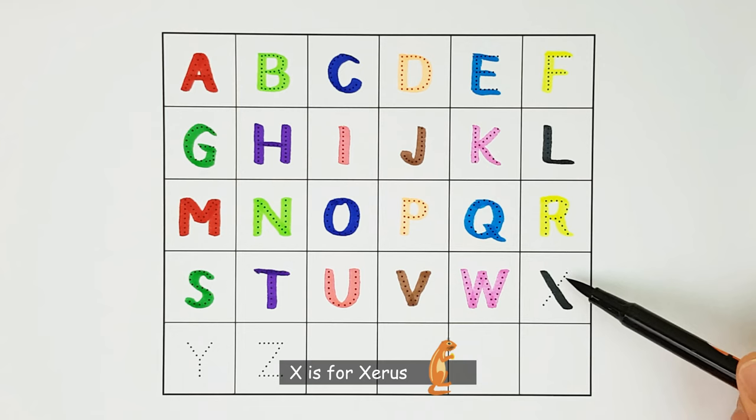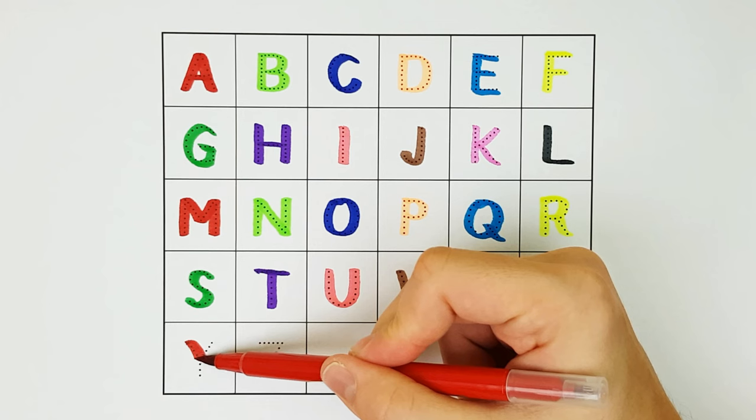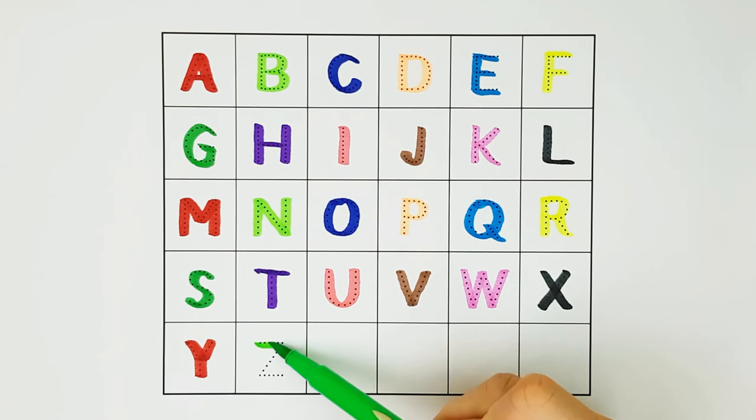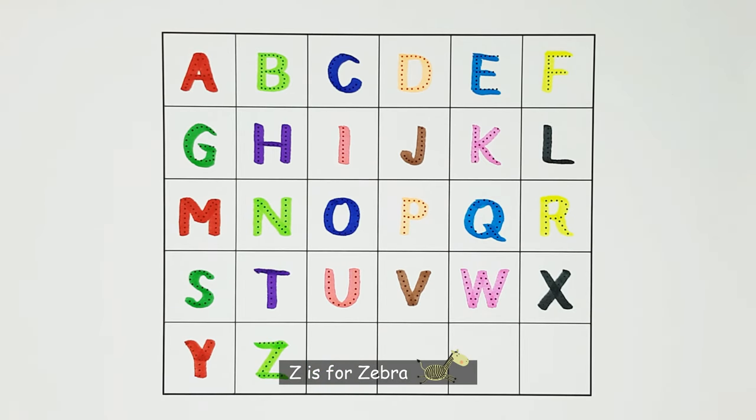X. X is for Xerus. X. Y. Y is for Yak. Y. Z. Z is for Zebra. Z.